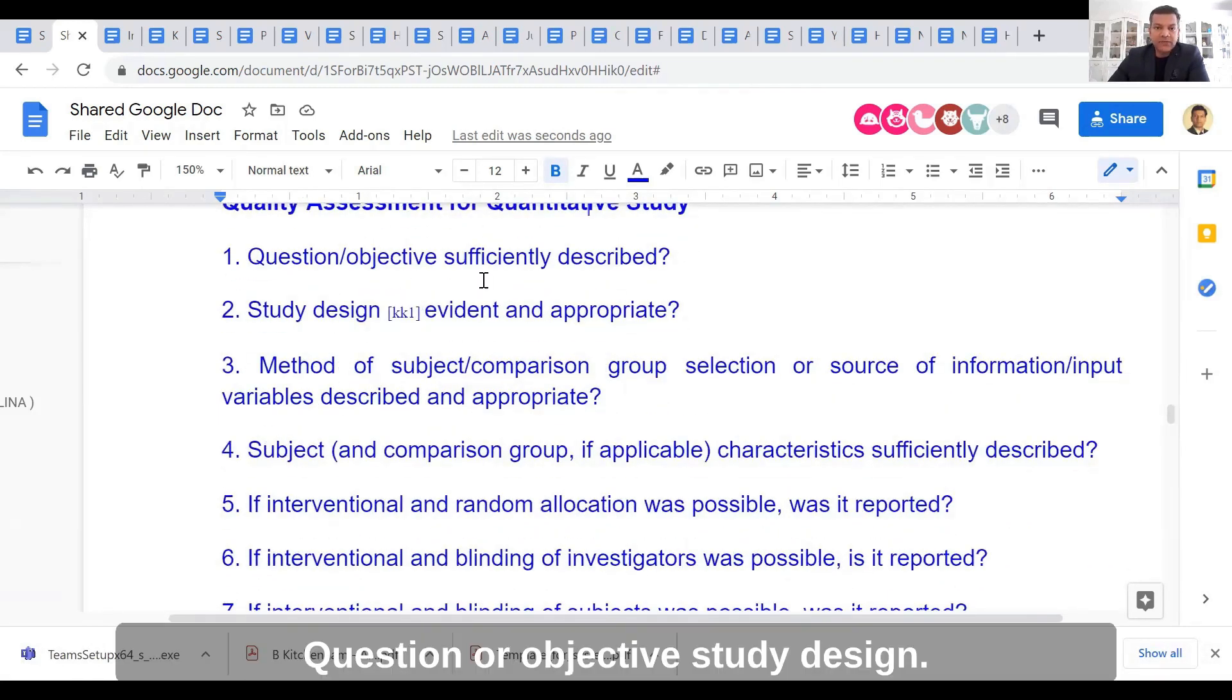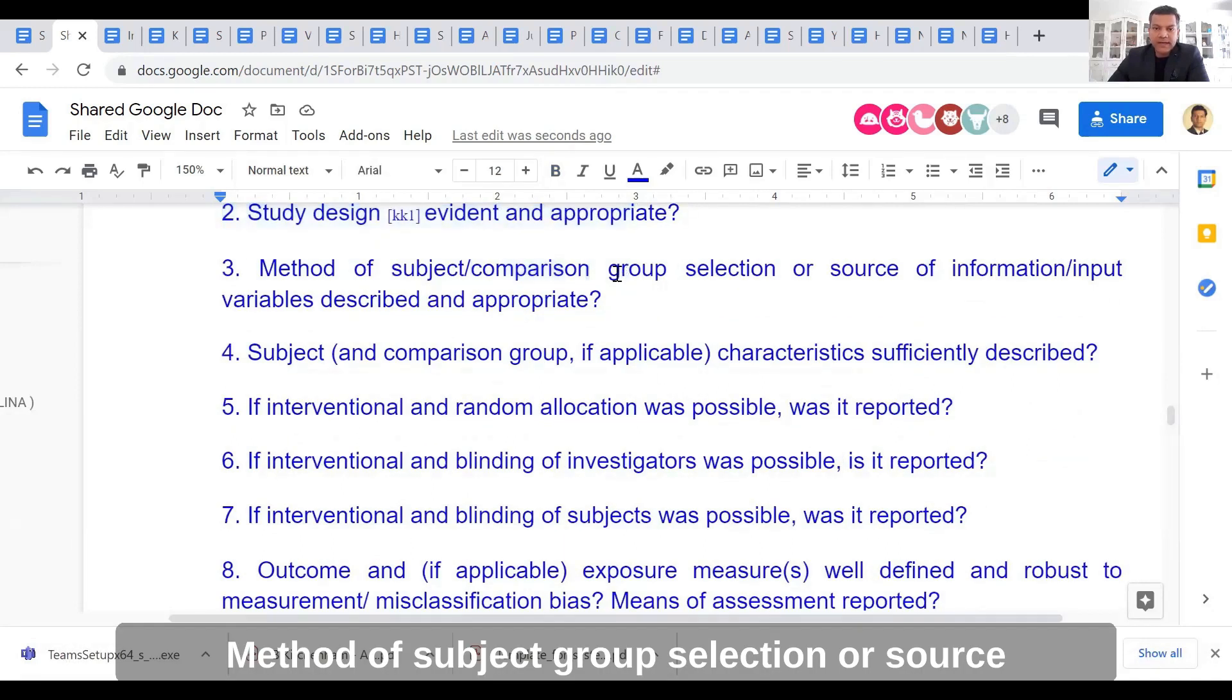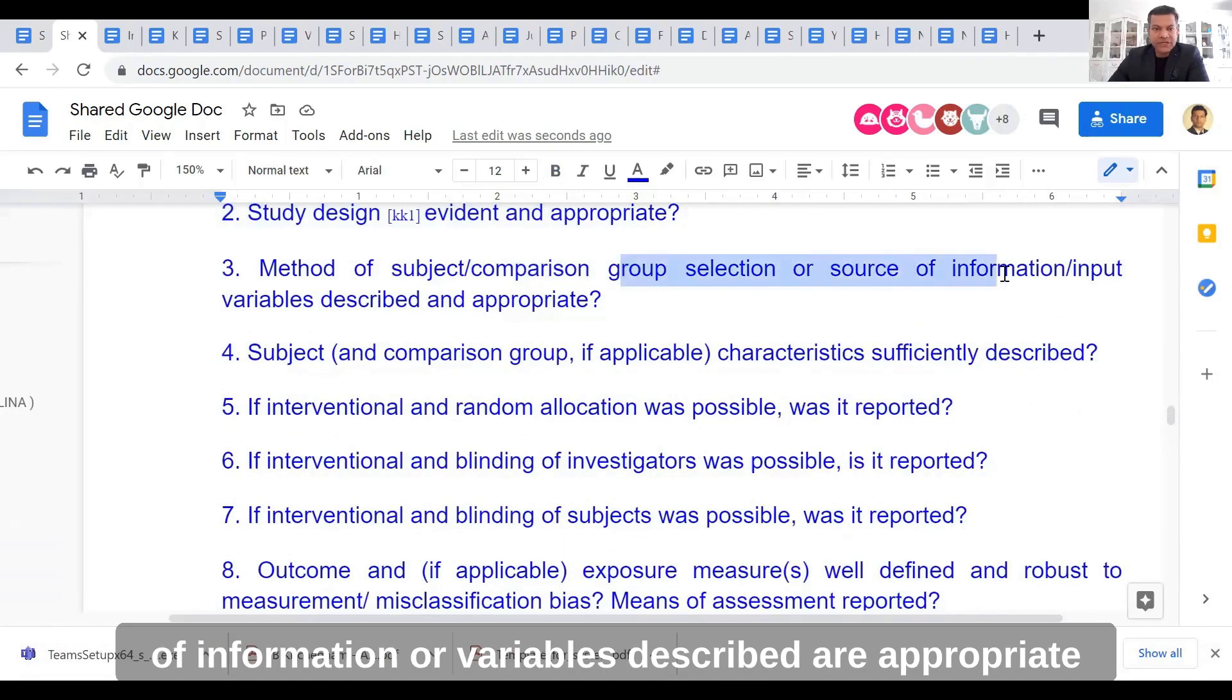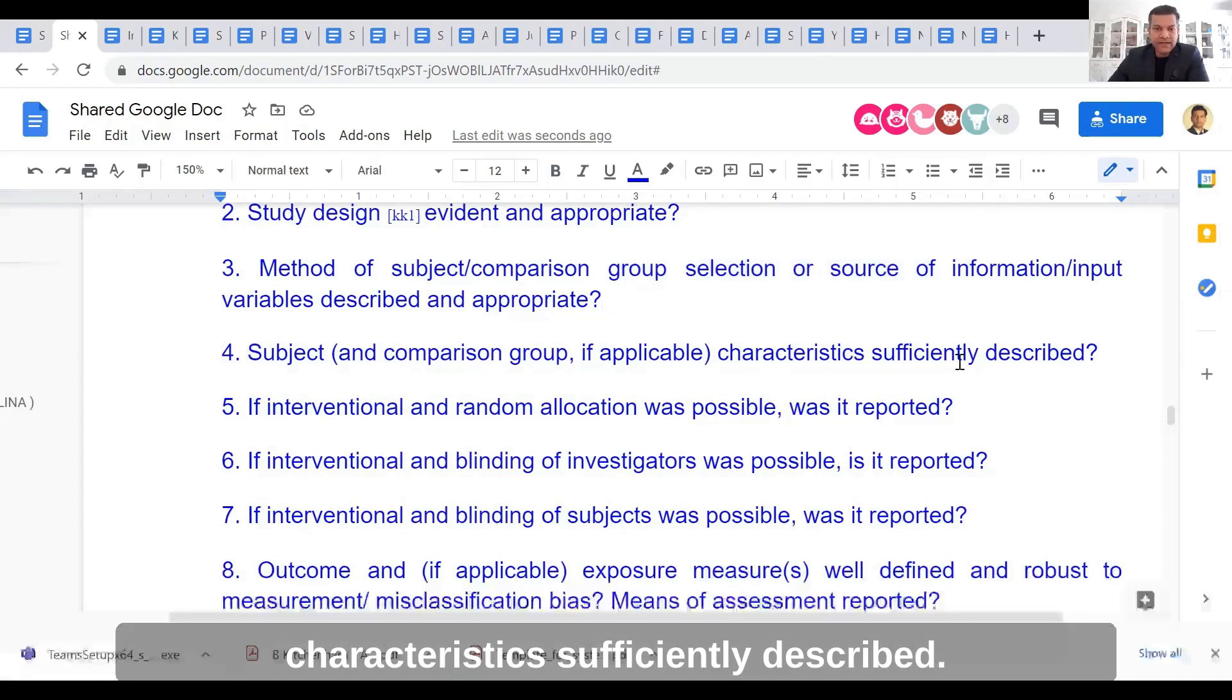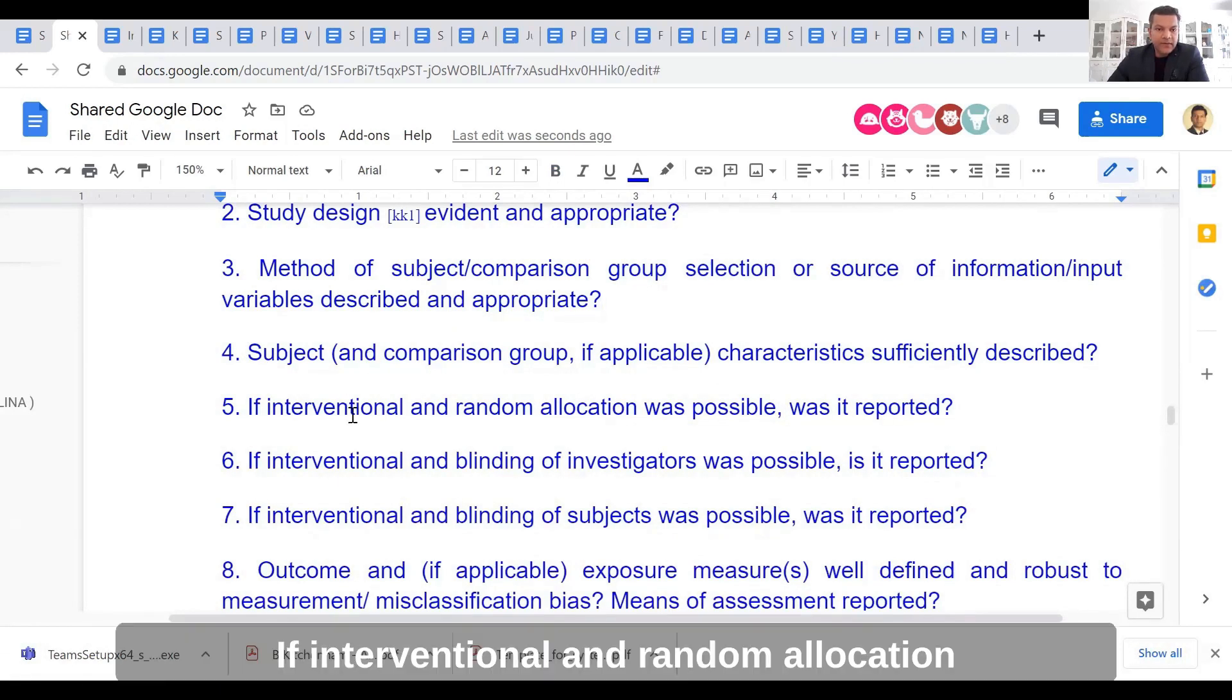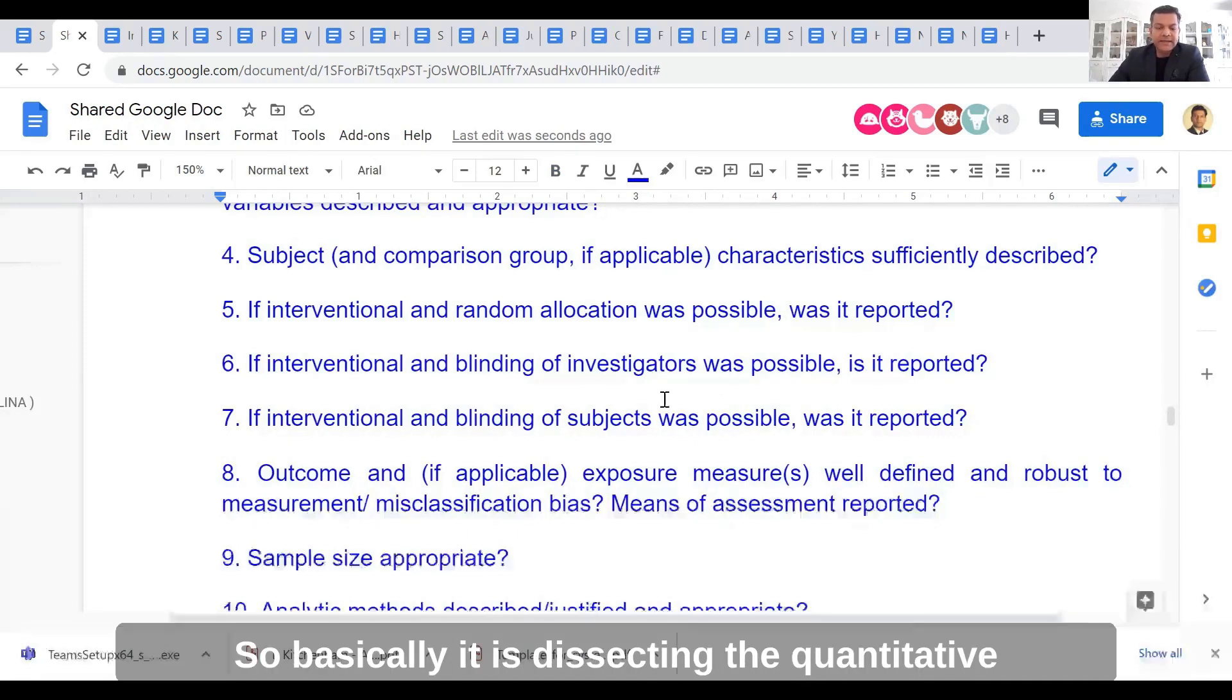Question or objective, study design - this could be common for both quantitative and qualitative. Method of subject group selection, source of information, variables described and appropriate, subject characteristics sufficiently described. If interventional and random allocation was possible, was it reported? If interventional and blinding of investigators was possible, is it reported?